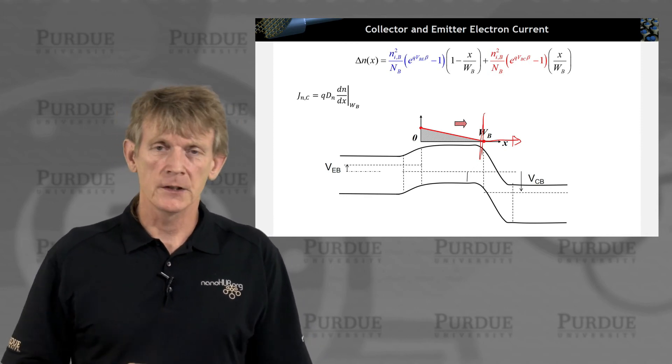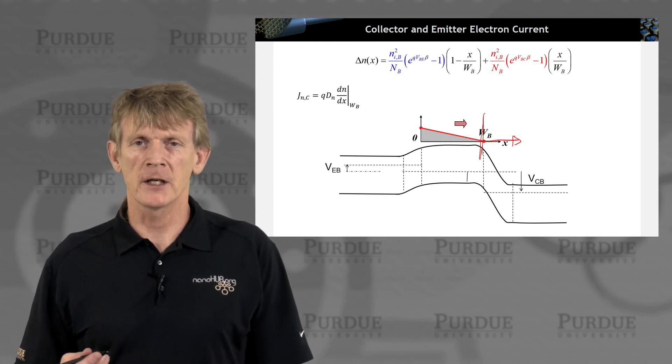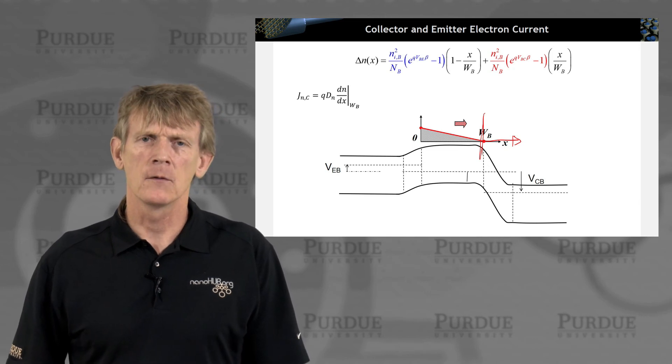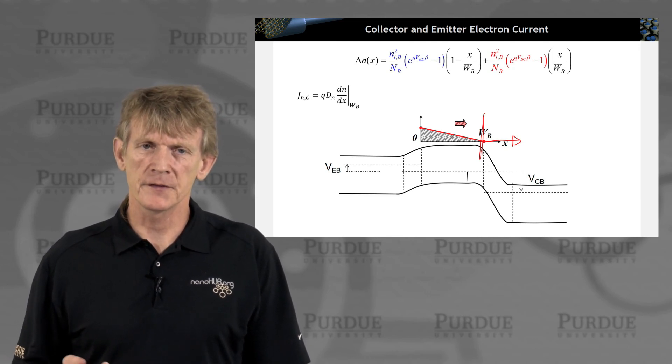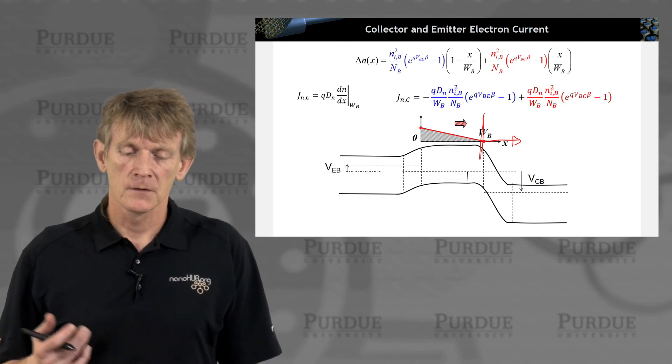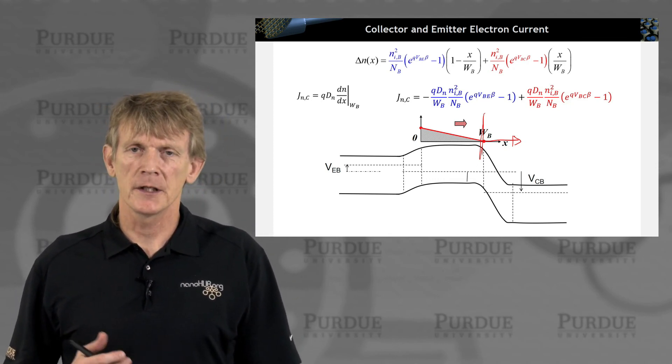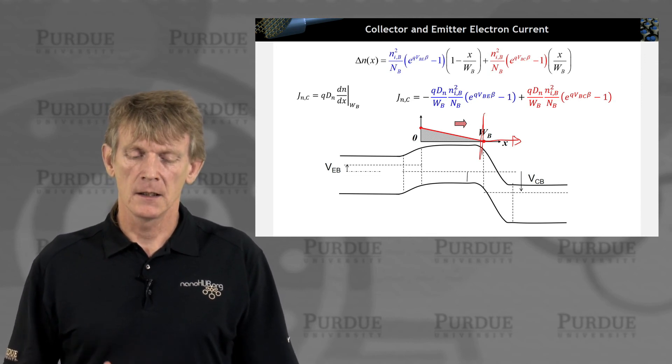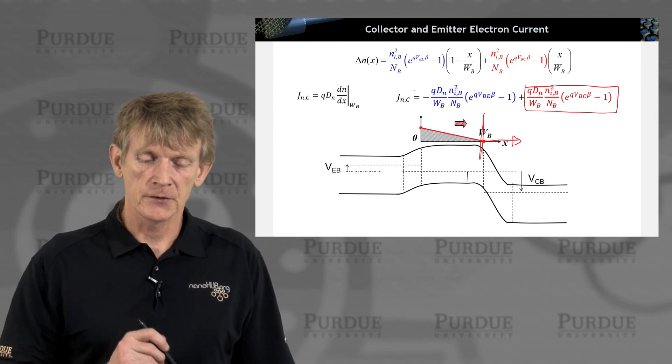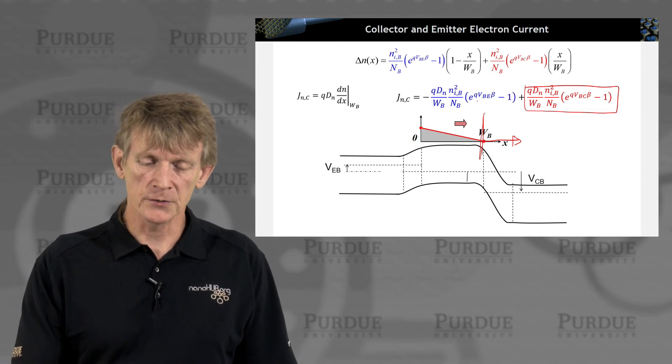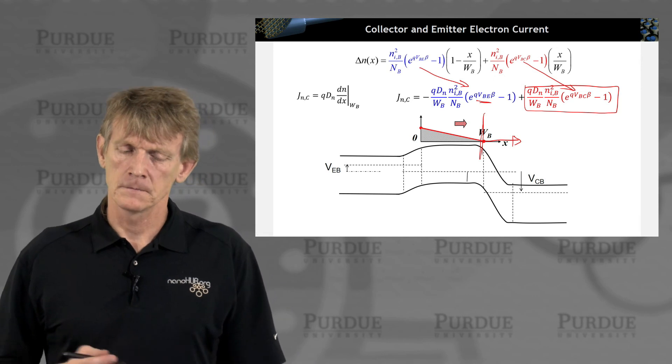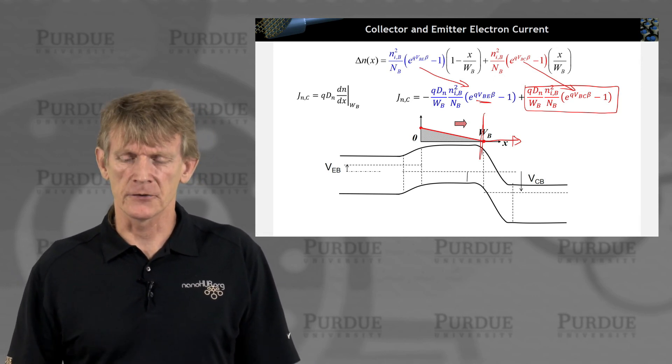We assume that this is a diffusion current. We have neglected the field term. So we just take the differential of n with x. That's just part of the drift diffusion equation, and we're dropping off the drift term. If we do that, we have a term that stems from the right-hand side, and we have a term that stems from the left-hand side. One goes with VBE, and one goes with VBC. Nothing fancy, really. It's just transfer from the p-n junction.